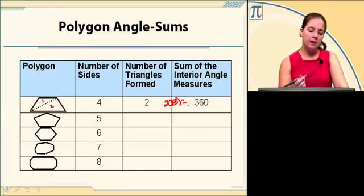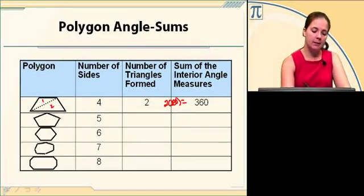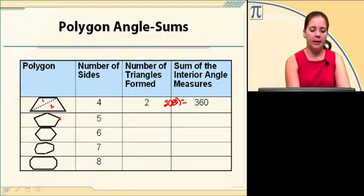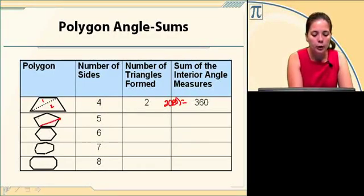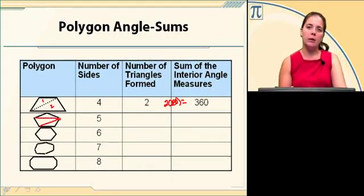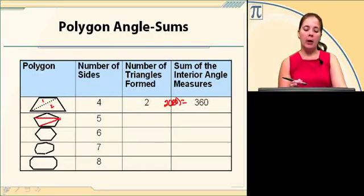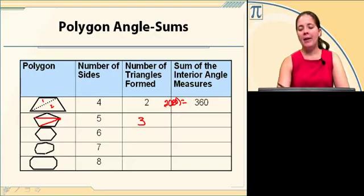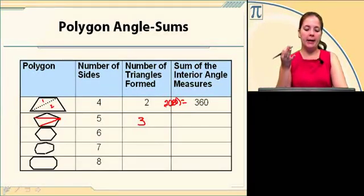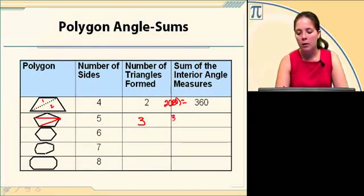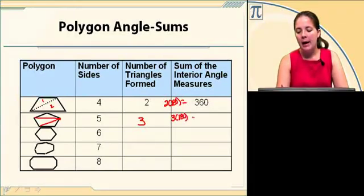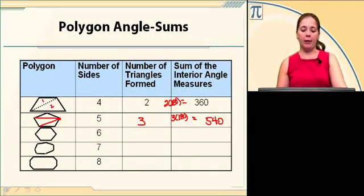If there's five sides, pick one vertex, draw all the diagonals possible from that one vertex. I've got two diagonals possible from that one vertex. Count the number of triangles: one, two, three. Then find the sum of the interior angles by taking 180 times three, and if you do that, 540 degrees.